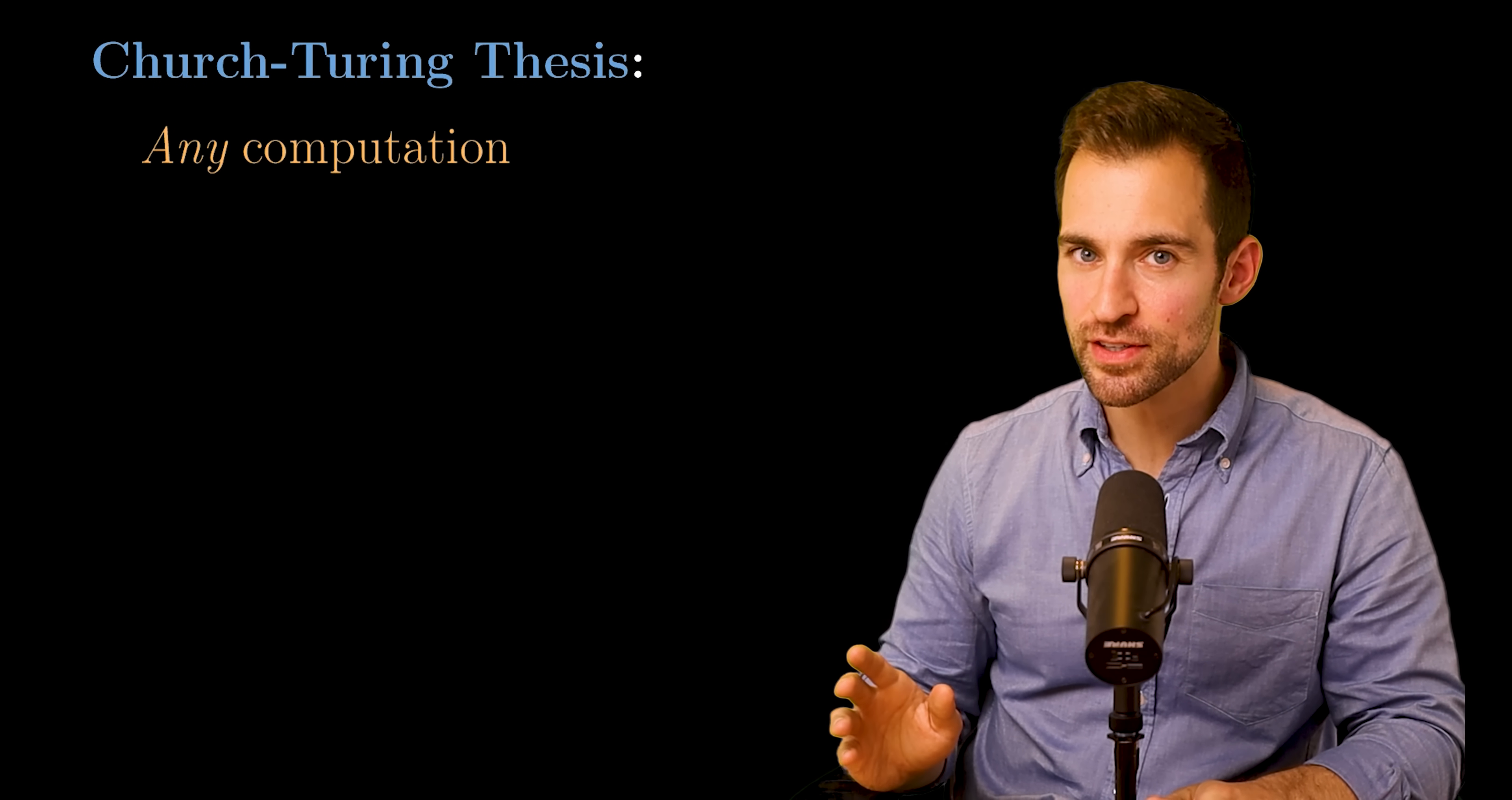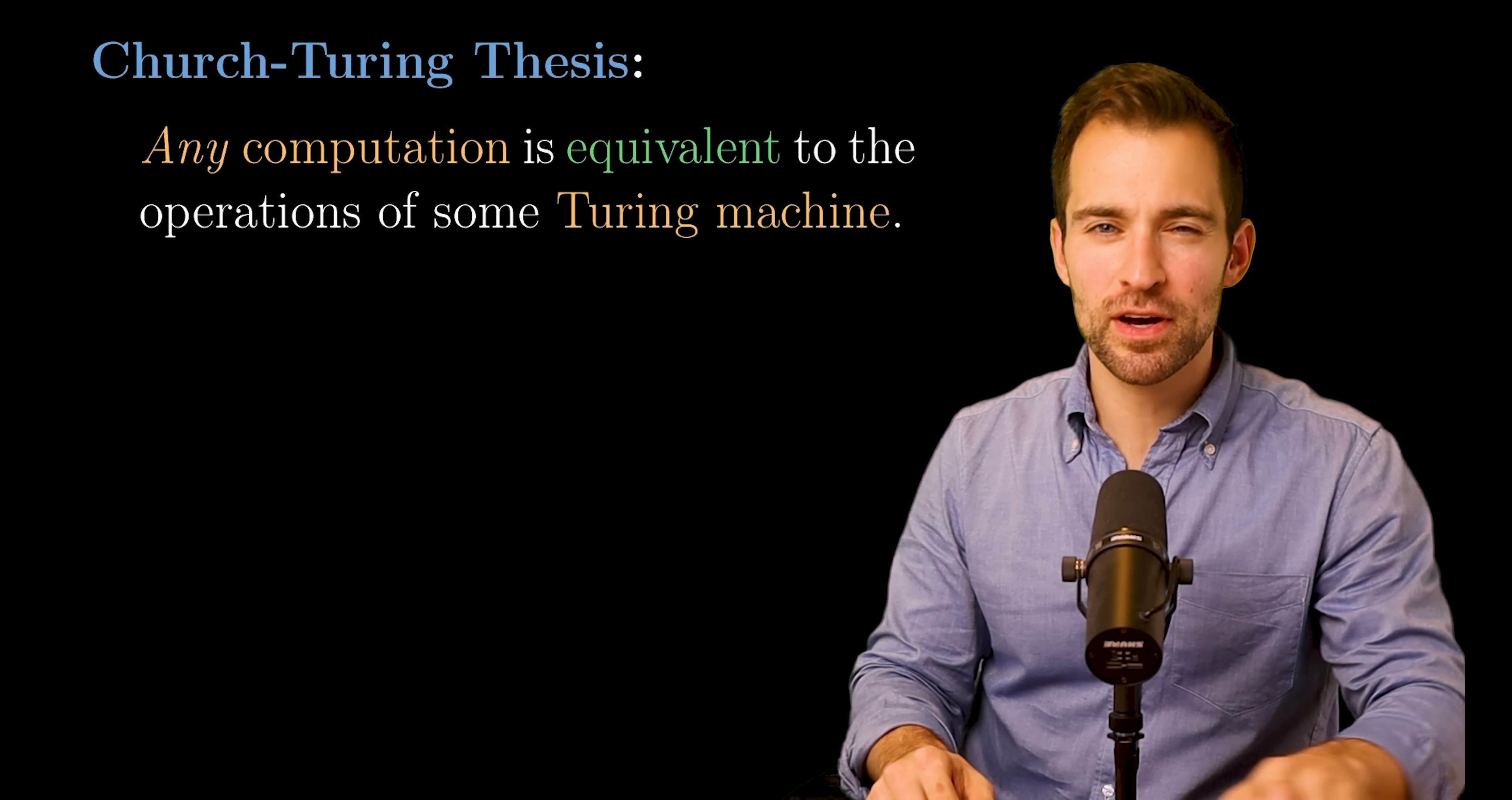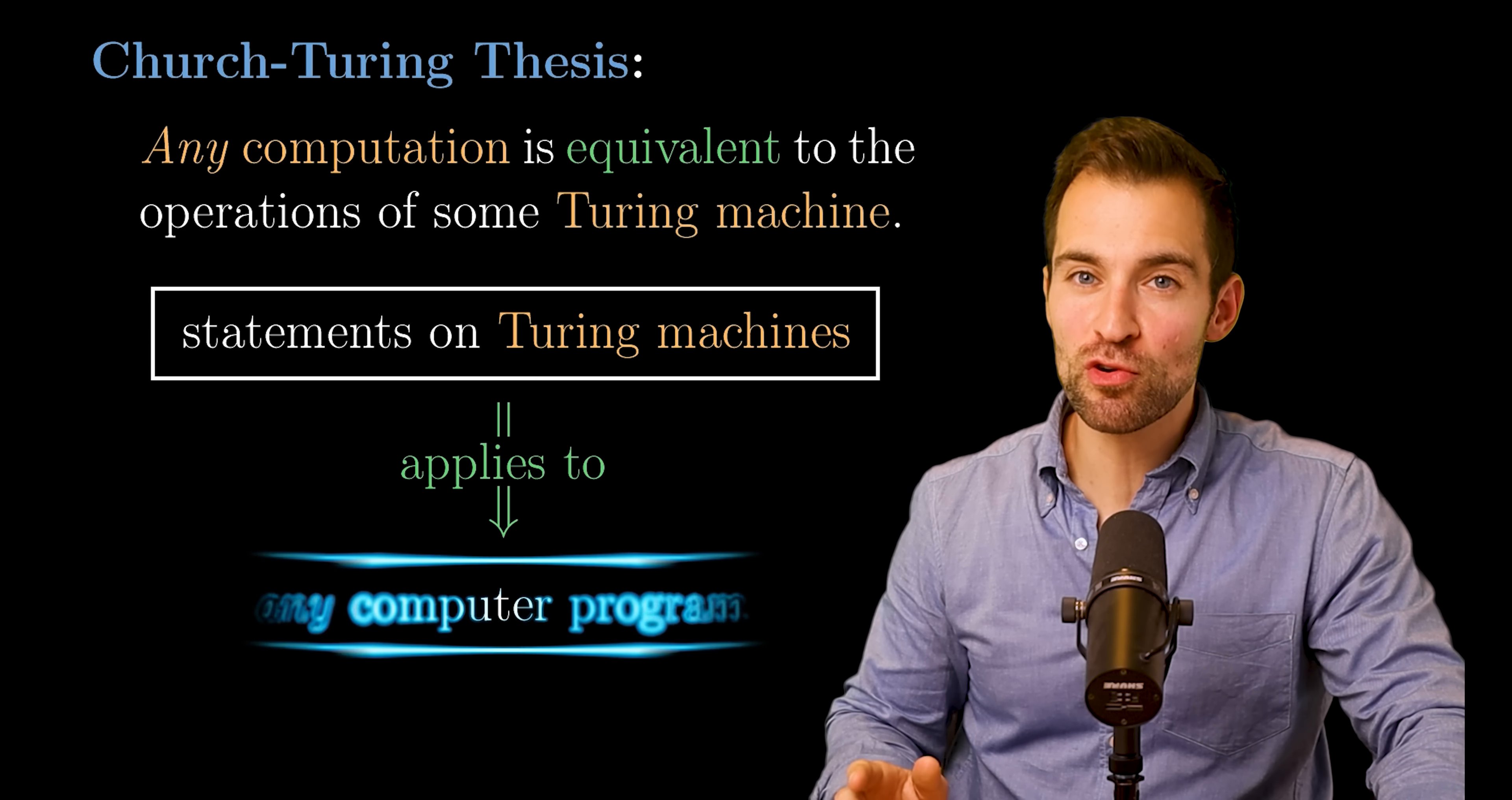Now, there are a few things we need to know about Alan Turing's invention. First, the Church-Turing thesis suggests any computation, that is, any finite sequence of steps applied to some input to produce some output, is equivalent to the operations of some Turing machine. That's a bit of an oversimplification, but it's good enough for our purposes. This means all of computation, all algorithms, may be thought of as Turing machines. And if we make statements about Turing machines, we can say those apply to all programs.